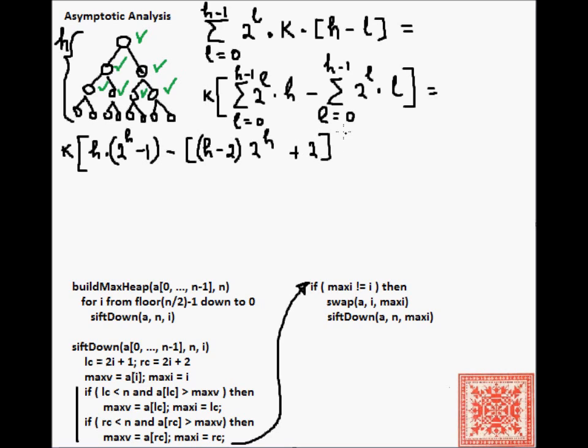This sum can be closed with this formula. Let's just state it over here. It's i times 2 to the i, from i equal to 1 to n. i times 2 to the i. This is equal to n minus 1, times 2 to the n plus 1, plus 2.